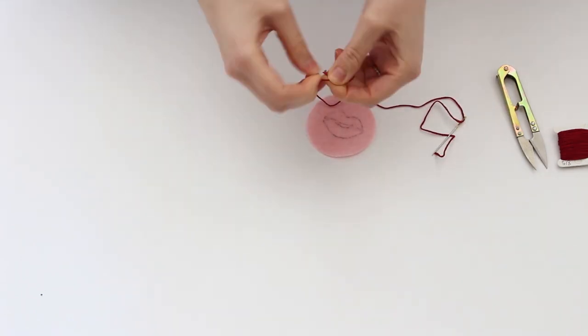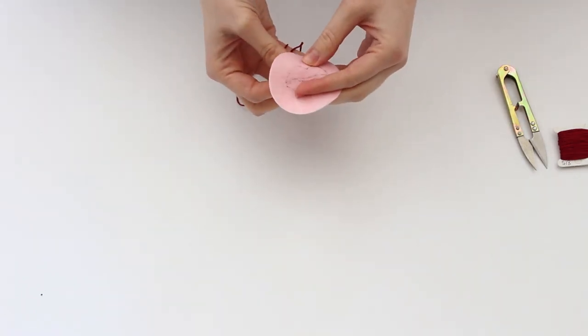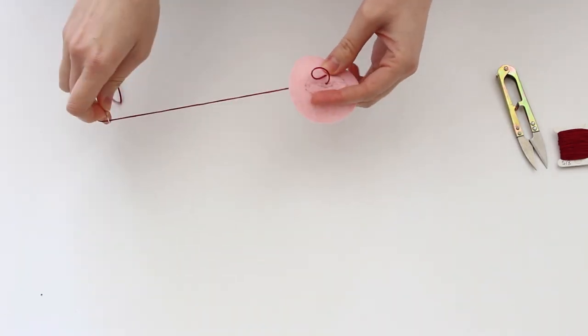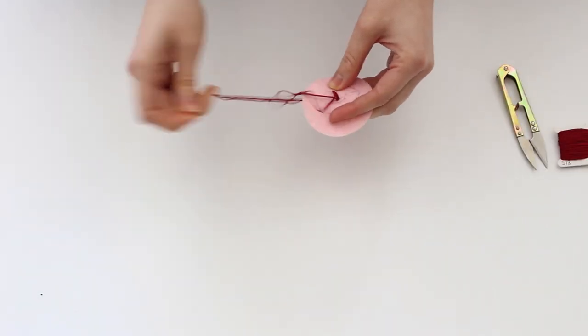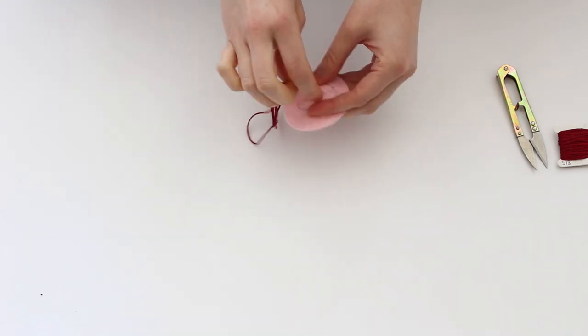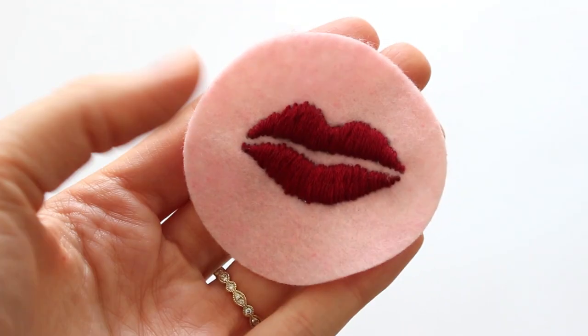I use satin stitch here. You just fill the shape from side to side all the way. Keep going until you fill everything. If you're new to embroidery, you should watch my tutorials. I have links in the description box and also in my blog post.